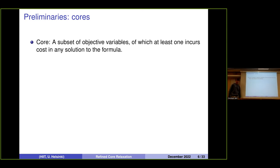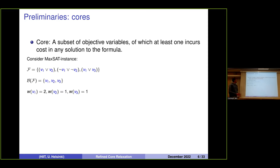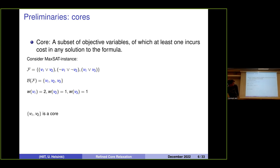Since this is about core-guided MaxSAT, the core is an important concept. A core is a subset of objective variables of which at least one equals one (incurs cost) in any solution to the formula. For example, given the formula (v1 ∨ v2) ∧ (¬v1 ∨ ¬v2) with objective variables v1, v2, v3: one core is {v1, v2}, since the clause forces at least one of them to be one. Another core is {v1, v3}, since another clause enforces setting either v1 or v3 to one.